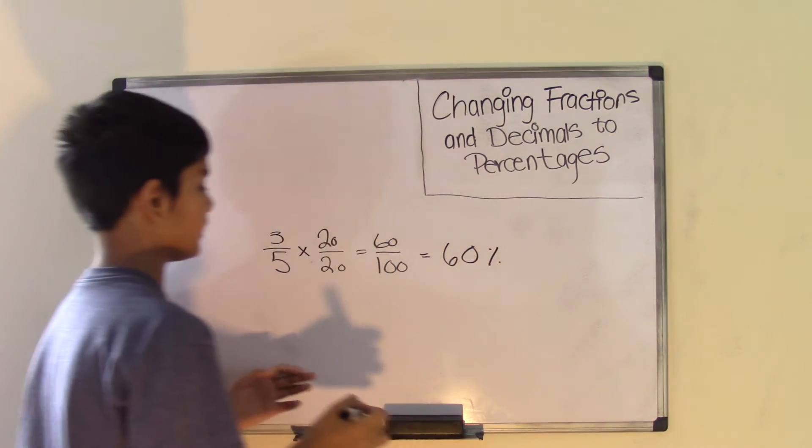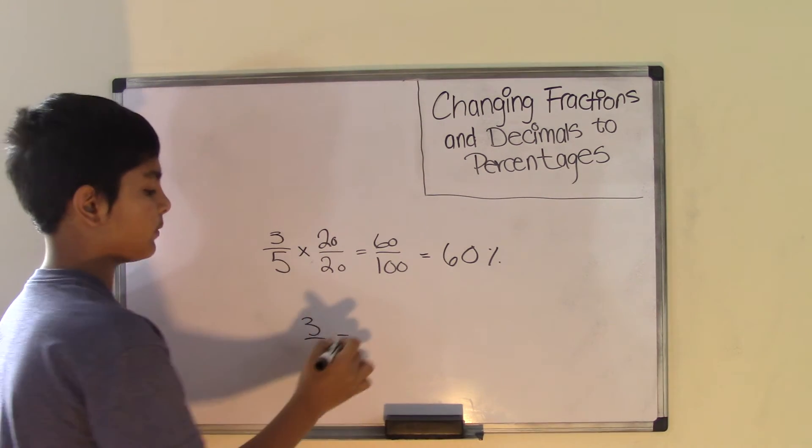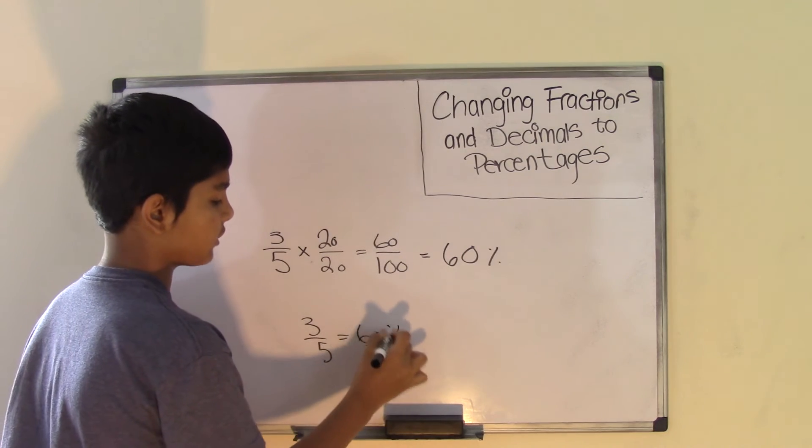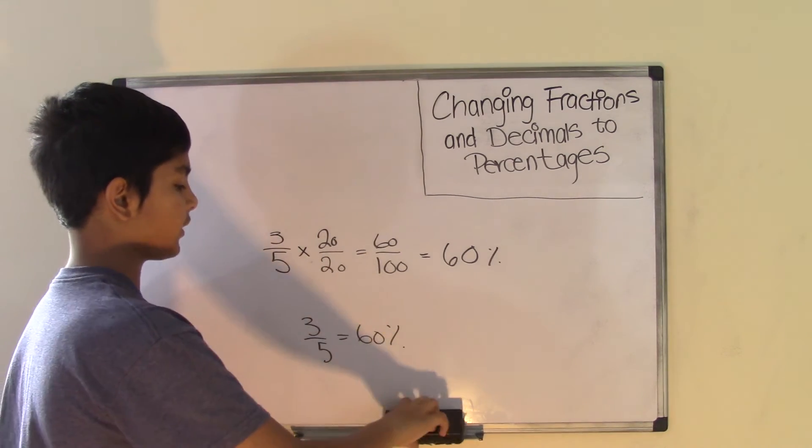So what I just did was I took the fraction 3 over 5 and I converted it into a percent which is 60 percent. So this is how you convert a fraction into a percent.